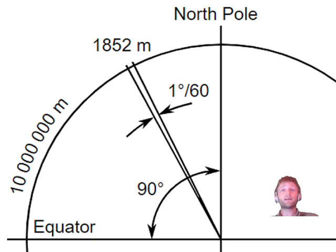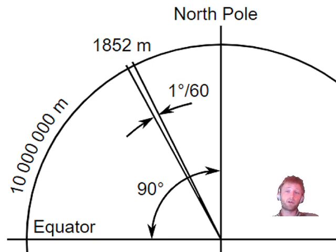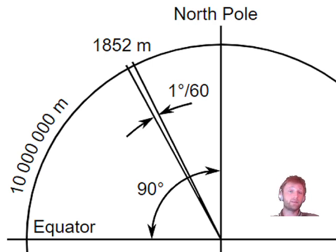Comparing 1852 meters to the statute mile, it equals 1.15 statute miles. Compared to a cable — a measurement of anchor length — it is 10.15 cables. There are differences in conversions across different symbols and units that each nation adopted over time. Both the English and French systems eventually adopted the nautical mile, which is why we use this unit today.